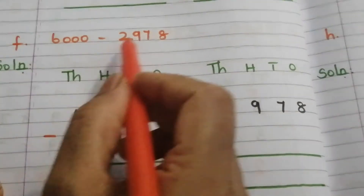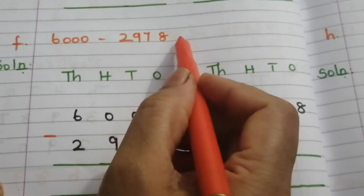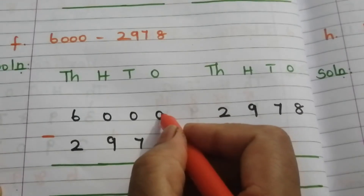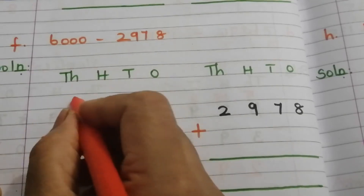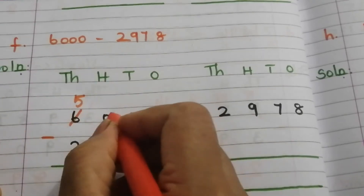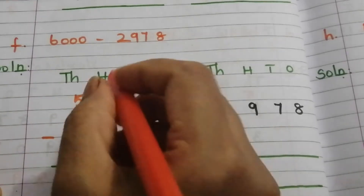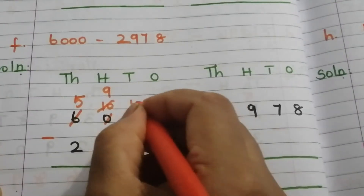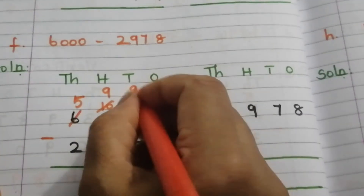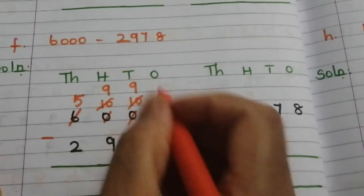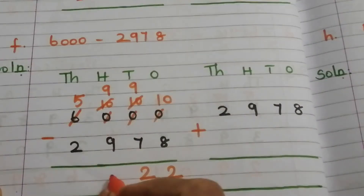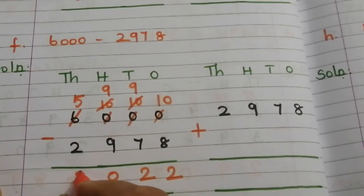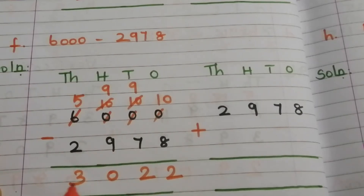Problem F: 60000 minus 2978. Start from ones place — value is 0, so move to next place repeatedly. 6 becomes 5 and the 0 becomes 10. Borrow: 10 becomes 9 and next 0 becomes 10. Becomes 9 again, then 0 becomes 10. 10 minus 8 is 2, 9 minus 7 is 2, 9 minus 9 is 0, 5 minus 2 is 3. The answer is 3022.